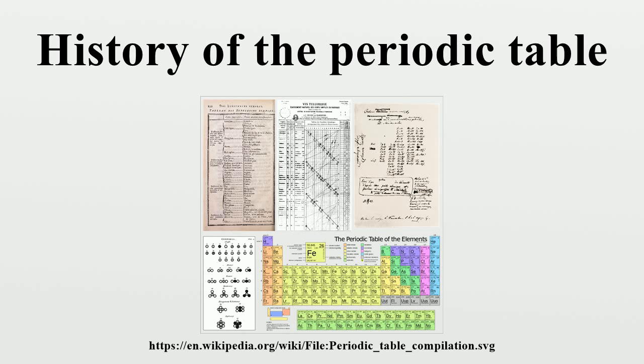In all of the triads, the atomic weight of the middle element was almost exactly the average of the atomic weights of the other two elements.